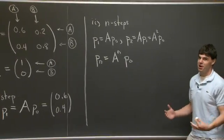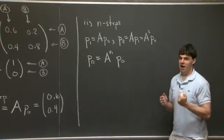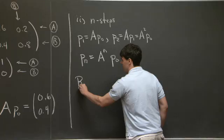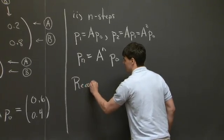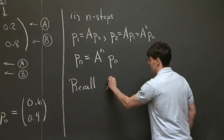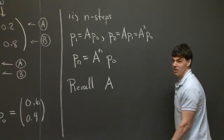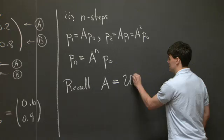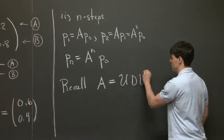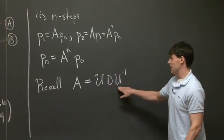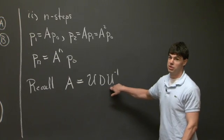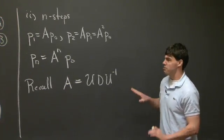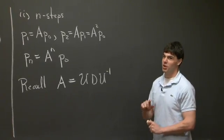So how do we take the nth power of a matrix? Well, this is where we use eigenvectors and eigenvalues. So recall that we can take any matrix A that's diagonalizable and write it as U D U inverse, where D is a diagonal matrix. And this matrix U is a matrix whose columns correspond to the eigenvectors of A. So for this problem, I'm just going to state what the eigenvalues and eigenvectors are, and I'll let you work them out.